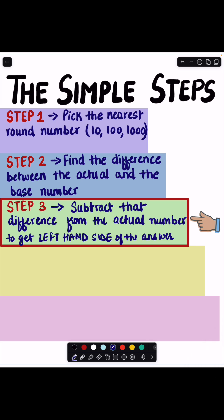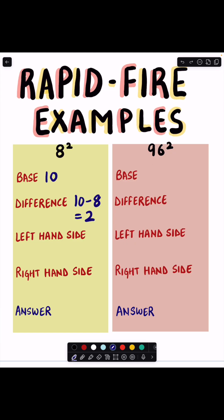Step 3: Subtract the difference from the actual number to get left hand side of the answer. So our actual number is 8 and our difference is 2. When we subtract them we get 6 and this is the answer on our left hand side.